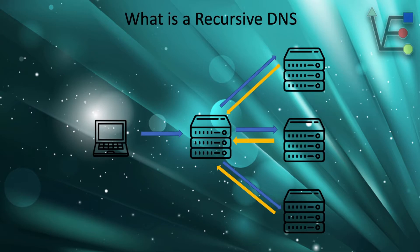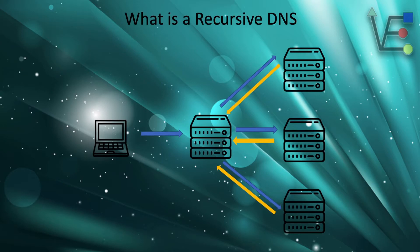Now, your DNS server at this point will cache that IP address so it knows the IP address for virtualizeeverything.com, and then sends it back to your computer.